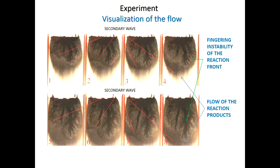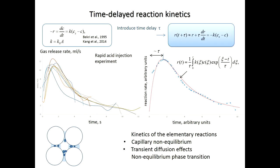In this figure, we can see the flow visualization. Figures one to four correspond to one oscillation cycle, and five to eight to another oscillation cycle. We can see formation and propagation through the reaction zone. We call it secondary wave. This wave is a saturation shock. Fingering instability of the reaction front is also shown.